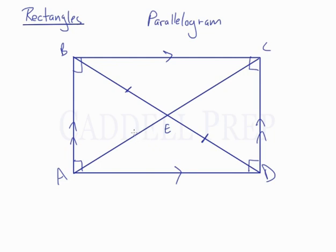But in a rectangle, not only are these congruent, but all four of these line segments are congruent. So BE is congruent to AE, congruent to DE, and that's congruent to CE.